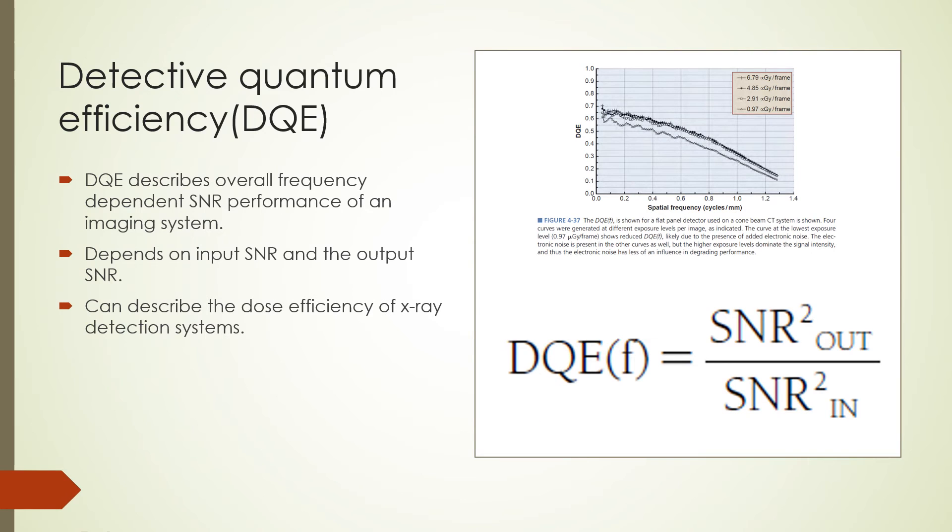We have here a quantitative method for analyzing spatial and contrast resolution by using the detective quantum efficiency. The detective quantum efficiency is a characterization used by imaging scientists. It describes the overall frequency-dependent signal-to-noise ratio performance of the imaging system. It uses the input signal-to-noise ratio and the output signal-to-noise ratio to calculate the detective quantum efficiency as shown by the formula on this slide. It is considered an excellent description of the dose efficiency of an X-ray detection system.